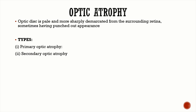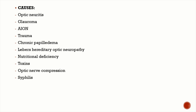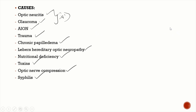Optic atrophy: the optic disc appears pale, sharply demarcated from the surrounding retina, with a punched-out appearance. It can be primary (appearing de novo) or secondary (due to another optic nerve disease, such as optic neuritis). Causes include optic neuritis, glaucoma, anterior ischemic optic neuropathy, trauma, chronic papilledema, Leber's hereditary optic neuropathy, nutritional deficiencies, toxins, optic nerve compression at the orbit, and neurosyphilis.